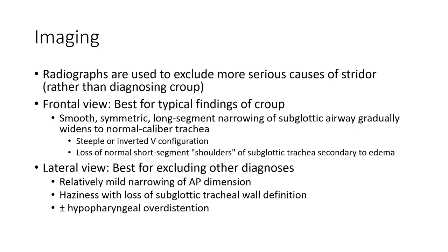Radiographs are used to exclude more serious causes of stridor rather than to diagnose croup. On the frontal view, the typical finding is a smooth, symmetric, long-segment narrowing of the subglottic airway, giving a steeple or inverted V configuration, with loss of the normal shoulder of the subglottic trachea secondary to edema.